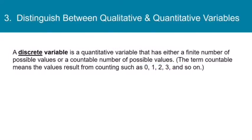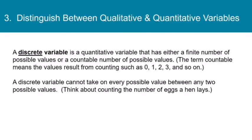Now let's talk about distinguishing discrete variables from continuous variables. Quantitative variables come in two types, discrete and continuous. So a discrete variable is a quantitative variable that has either a finite number of possible values or a countable number of possible values. The term countable means the values result from counting, such as 0, 1, 2, 3, and so on. A discrete variable cannot take on every possible value between any two possible values. For example, think about counting the number of eggs a hen lays. A hen can lay one egg or two eggs or three eggs, but she can't lay 2.5 eggs. So it's not possible to have that value in between 2 and 3. So this is discrete. Discrete here meaning that we hop from one value to the next.